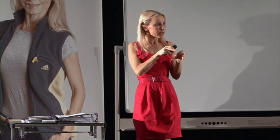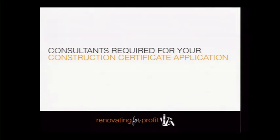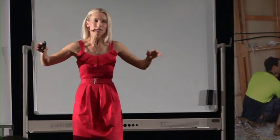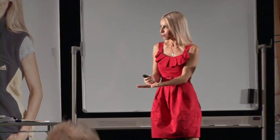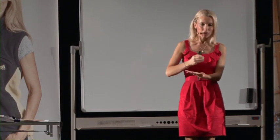Those are the main consultants for your development application. Now for the construction certificate application — or CC — most people don't realize there are two separate layers. Development approval means you have permission to build the building in principle. You then need a construction certificate — permission to actually start construction. A lot of people get their DA approved and think they're ready to start work, but that's not the case.